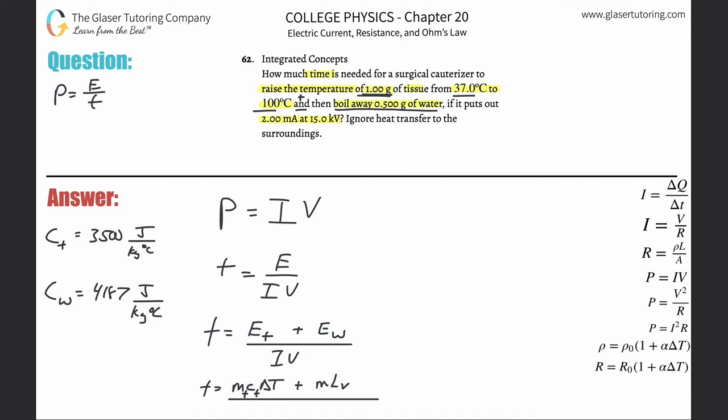This whole thing is divided by then the current times the voltage. So time, here we just start plugging it in. Just be careful with the units please. So the mass of the tissue, they gave it to us in grams, you know we need kilograms, so that's going to be 0.001 or just 1 times 10 to the minus 3.